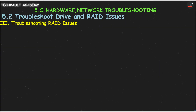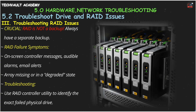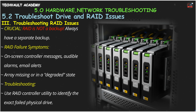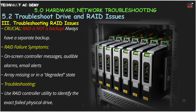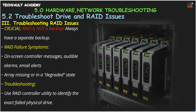Now let's talk about RAID — Redundant Array of Independent Disks. RAID uses multiple drives to increase speed or provide redundancy. But remember, RAID is not a backup. If you have a RAID failure, your RAID controller will often tell you with on-screen messages, audible alarms, or email alerts. The whole array might be missing or a single drive might be marked as failed. Your first step is to check the RAID controller's utility to identify the exact physical drive that failed. Replacing the wrong one can be catastrophic.